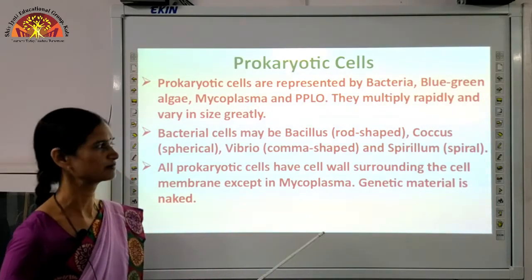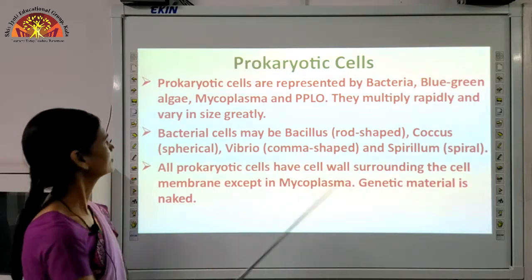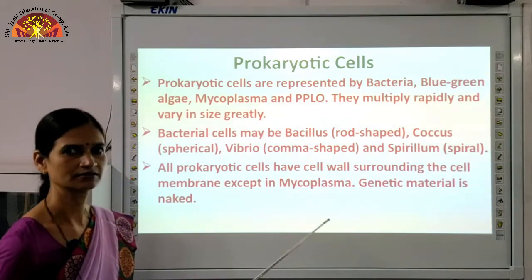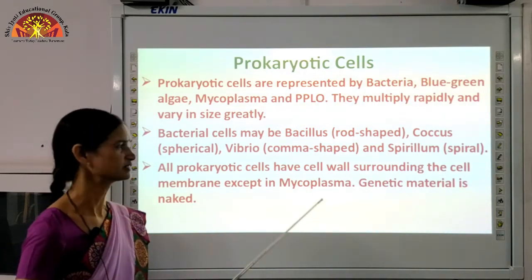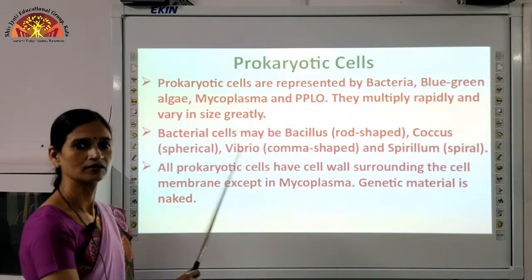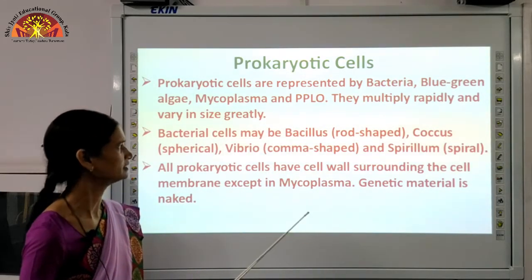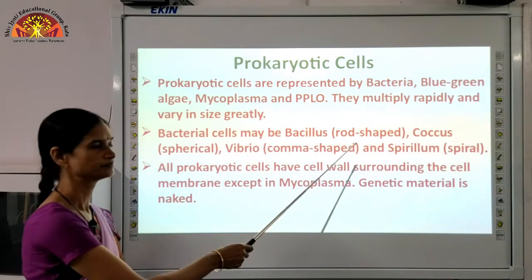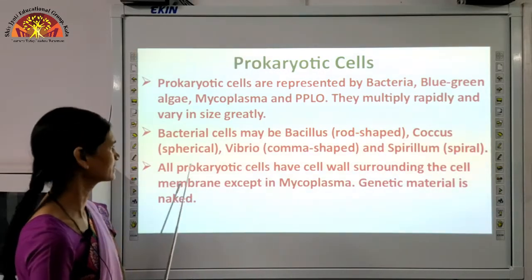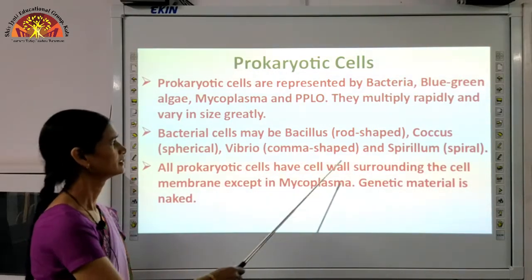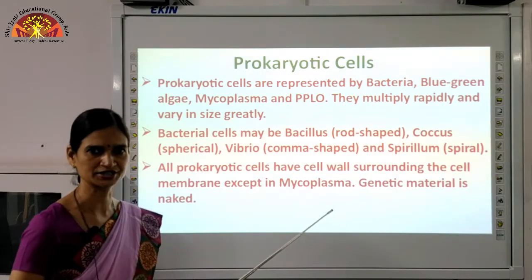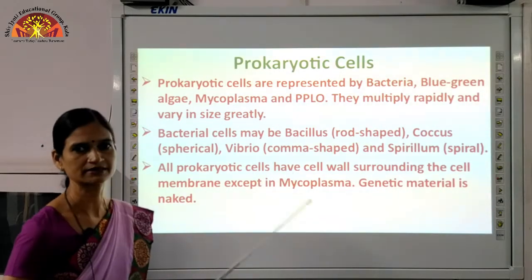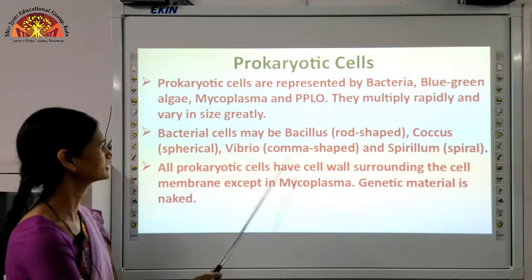On the basis of shape, bacteria may be bacillus — rod-shaped; coccus — round or spherical; vibrio — comma-shaped; and spirillum — spiral-shaped. These are the four types of bacteria divided on the basis of their shapes, which we have studied in ninth class.